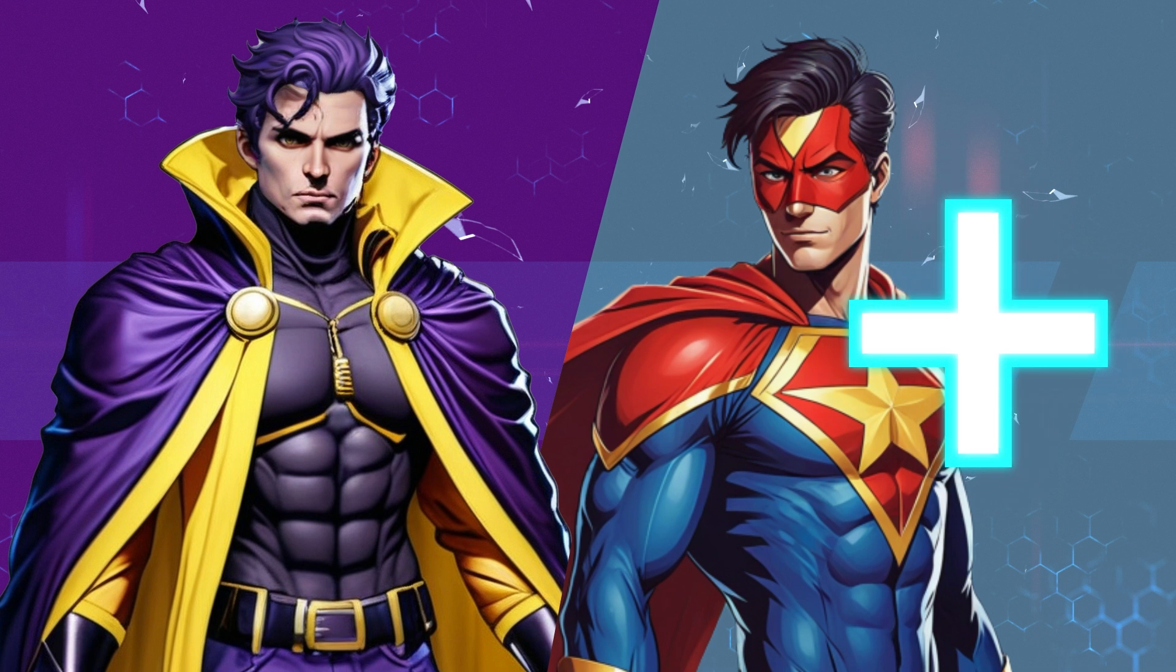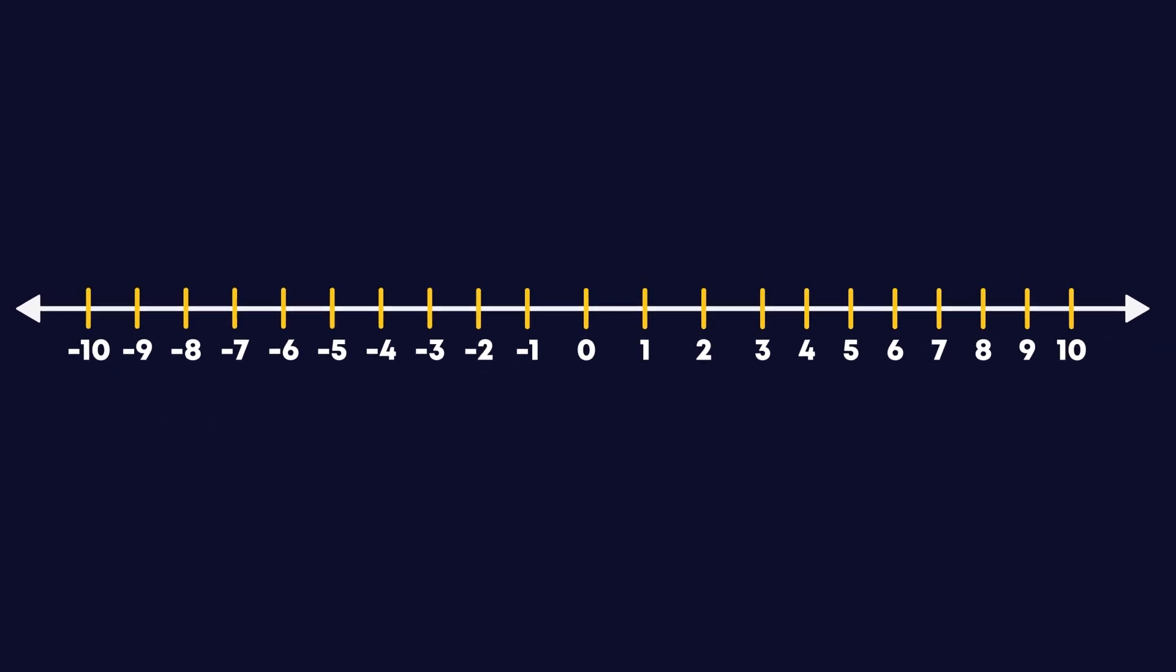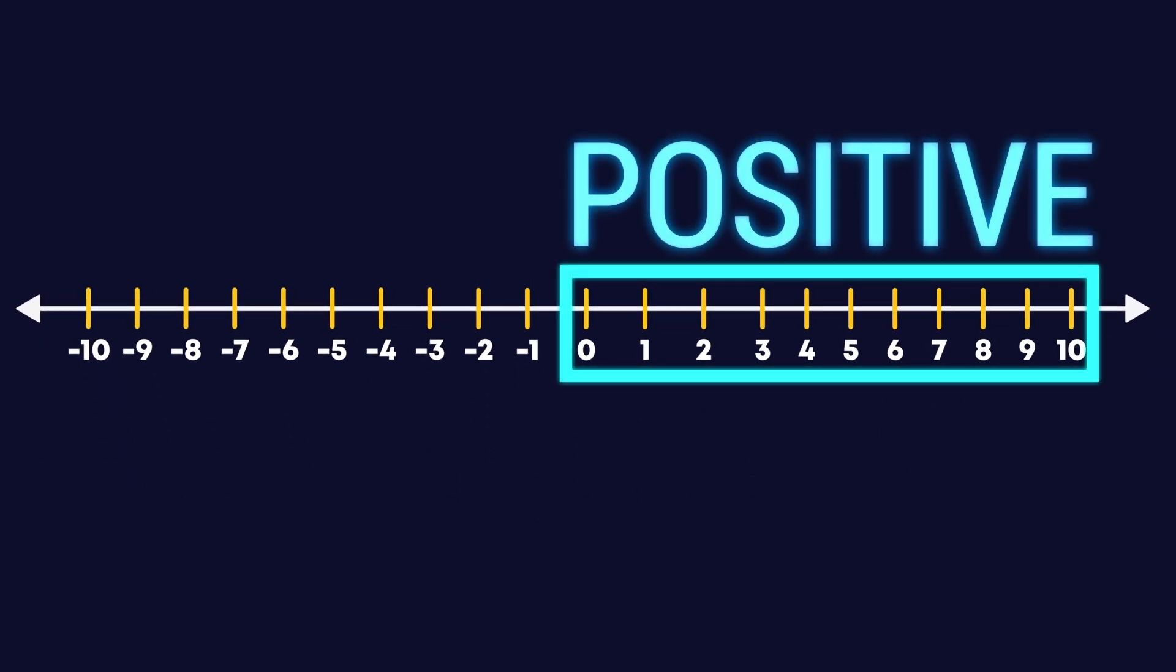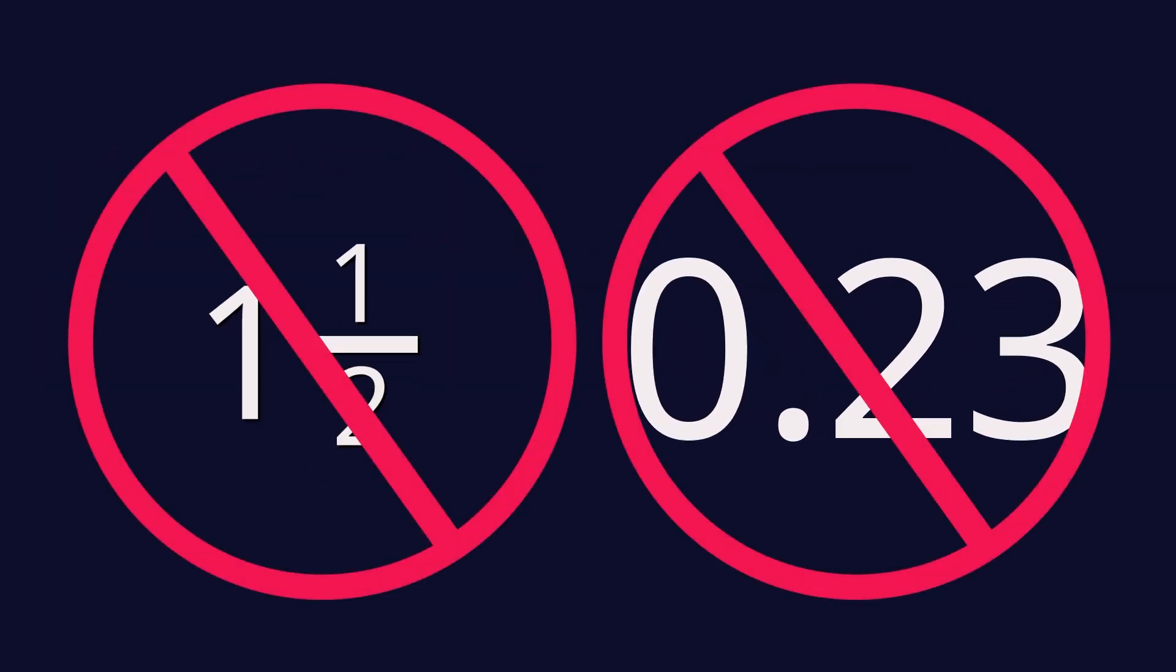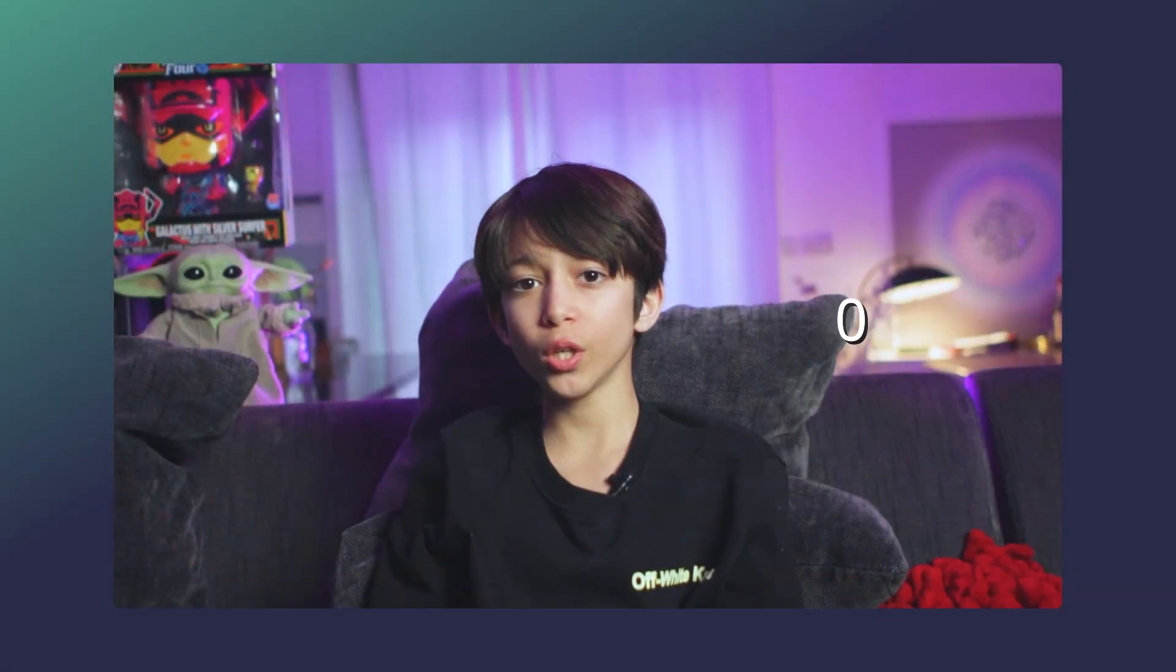The heroes have positive powers and the villains have negative powers. The same way, integers are simply made up of positive numbers and negative numbers. There are no fractions or decimals. Do you know that zero is also an integer?